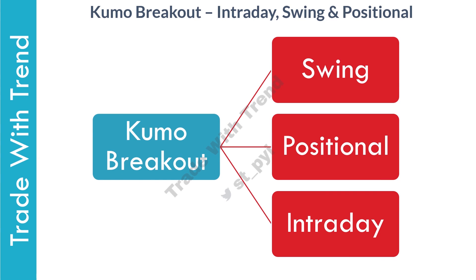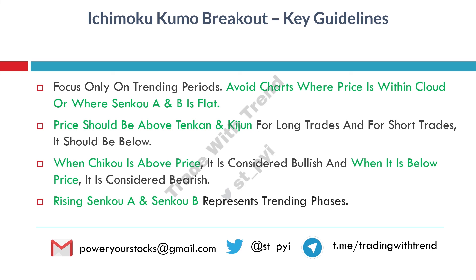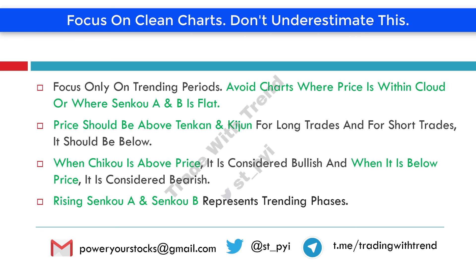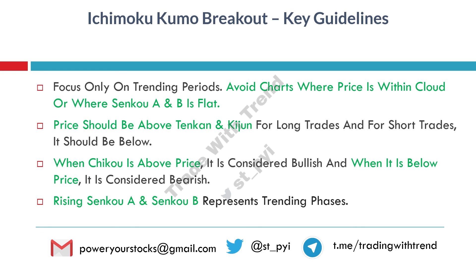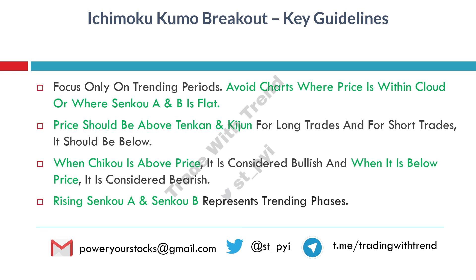We have now seen basic rules and confirmation rules for the Kumo breakout strategy. The application of Kumo breakout strategy is valid for intraday trading, positional trading, and swing trading. In the next three parts of the Ichimoku Cloud strategy series, I will be covering Kumo breakout for each type of trading, explaining entry, exit, and stop loss in detail. The key guidelines to follow: look for cleaner charts where trend is clearly visible; avoid charts where price is stuck in a range; price should be clearly above or below the Kumo Cloud; and all Ichimoku elements — Senku A and Senku B, Chikko, Tenkan, and Kijun — should be aligning in the direction of trend. Following these guidelines, you will end up trading only strong trends in the market.